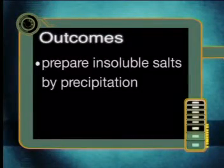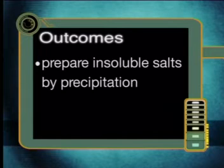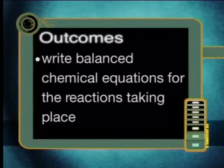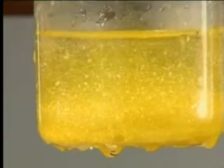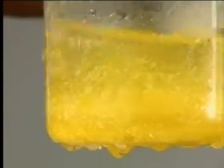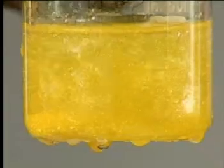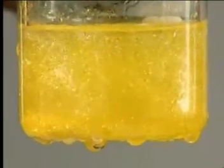At the end of this lesson you will be able to prepare insoluble salts by precipitation and write balanced chemical equations for the reactions taking place. There are some spectacularly colorful experiments that you can see in a chemistry laboratory. This is one of the most beautiful you will see — take a good look at the glittering crystals floating down in this flask. This is not glitter but an example of preparing precipitates in chemistry.